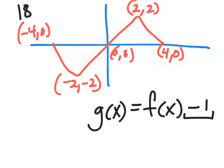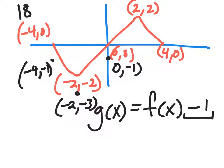Negative 4, 0 would become negative 4, negative 1. Negative 2, negative 2 would become negative 2, negative 3. 0, 0 would become 0, negative 1. 2, 2 would become 2, 1. And 4, 0 would become 4, negative 1.